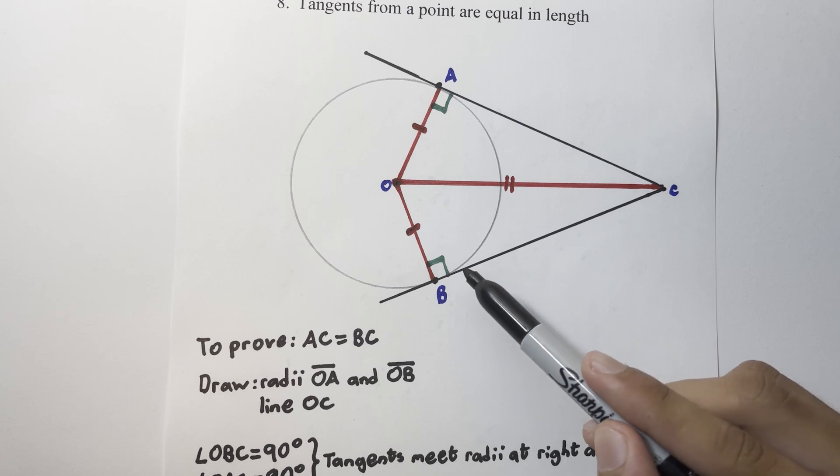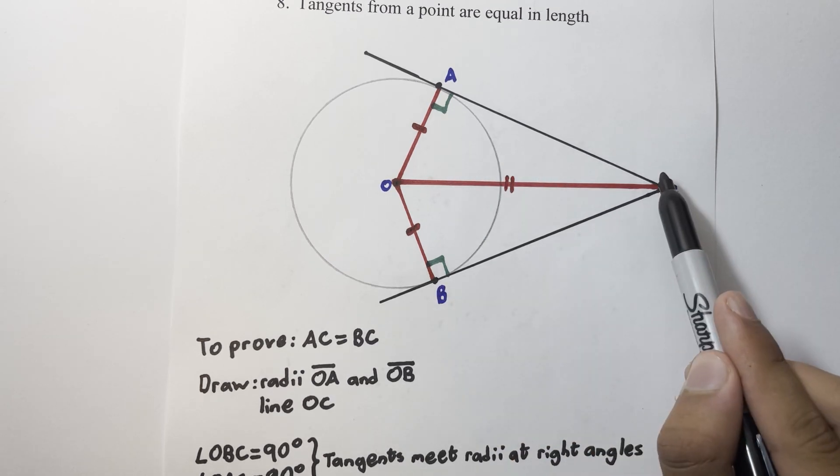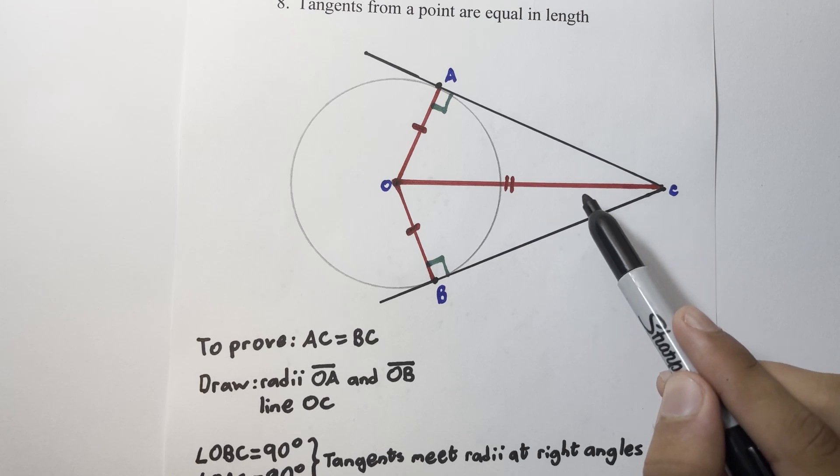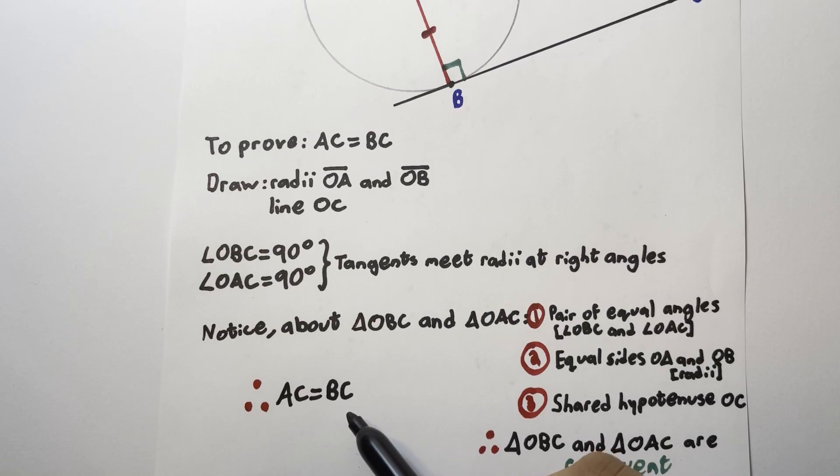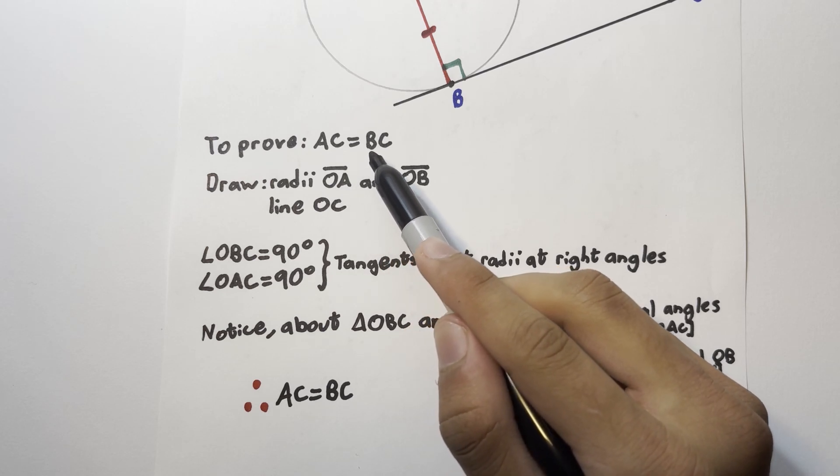Having shown that the triangles are congruent, we have thus proved what we've originally sought out to prove, and thus proved the whole theorem.